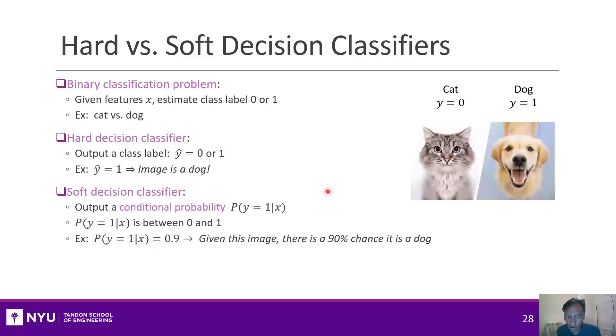A soft decision classifier, in contrast, doesn't give you a hard label like the image is a cat or a dog. Instead, it gives you a softer quantity, which is the conditional probability. The probability is just a number between 0 and 1. For example, if it gave the number 0.9, it was saying that this image is 90% chance that it's a dog, but it's a 10% chance that it's a cat. In mathematical lingo, we write that as the probability that y is 1 given x.